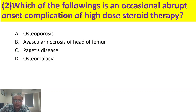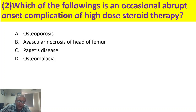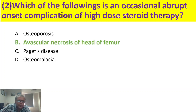Which of the following is an occasional, abrupt onset complication of high dose steroid therapy? The options are osteoporosis, avascular necrosis of head of the femur, Paget's disease, and osteomalacia. Osteoporosis is a definite complication but it is of gradual onset, not abrupt. Paget's disease and osteomalacia have nothing to do with corticosteroids. The answer is avascular necrosis of the head of the femur — a sudden onset complication with no treatment other than replacement of the femoral head. So the answer is B.